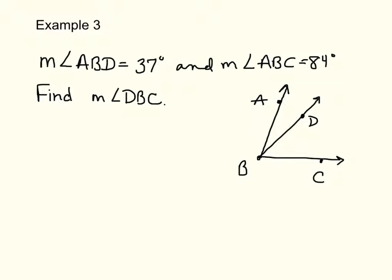Example number three. The measure of angle ABD is equal to 37 degrees. And the measure of angle ABC is 84 degrees. Find the measure of angle DBC. If you have a picture, write it down. Label it. I cannot stress that enough. Label, label, label, label. Fill in pictures. It will help you immensely. So the measure of angle ABD, this angle right here, is 37 degrees. The measure of angle ABC, the entire angle, is 84 degrees. We want to find the measure of angle DBC, which is this one. So this is just common sense.